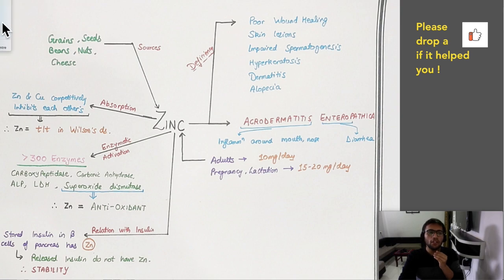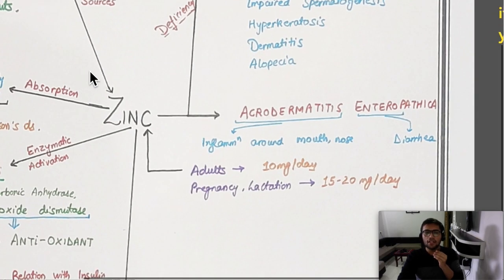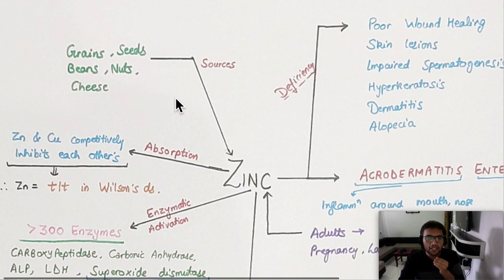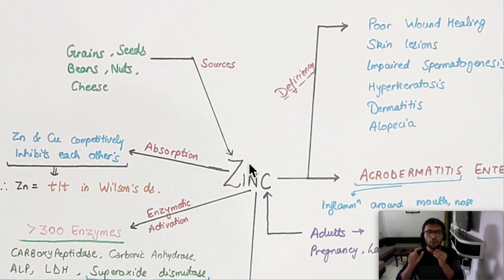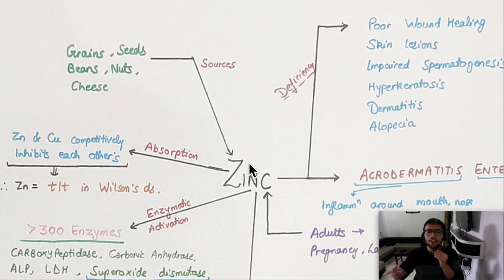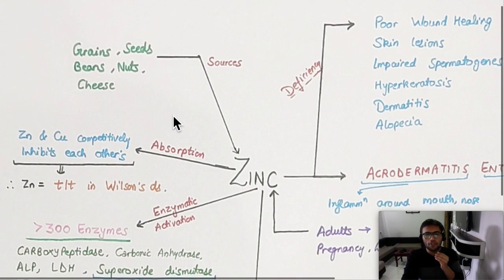For zinc, we only need to know this chart, so let's dissect it. For any mineral, first you need to know the source. Our favorite food item that has zinc in it is cheese. Apart from that, grains, seeds, beans, and nuts are generalized sources — not much of an issue to remember.